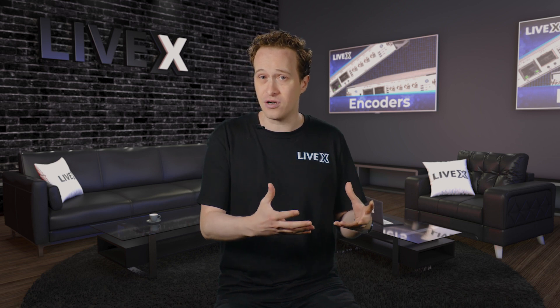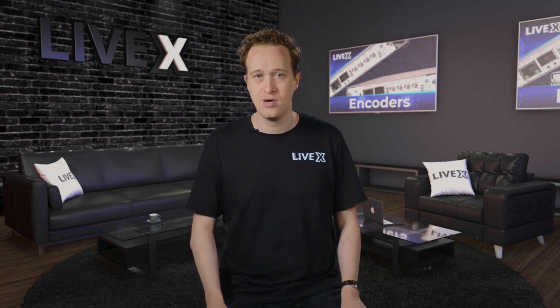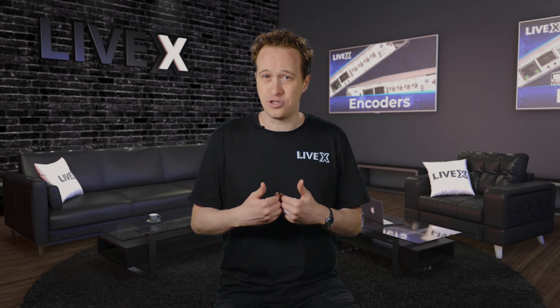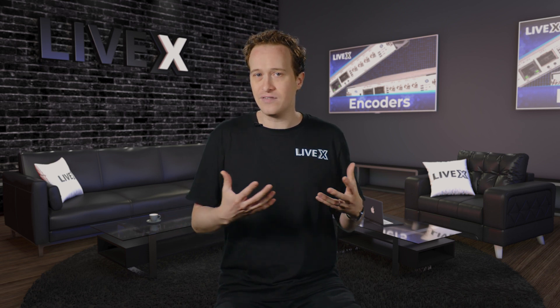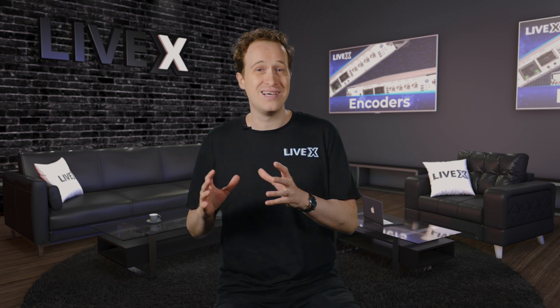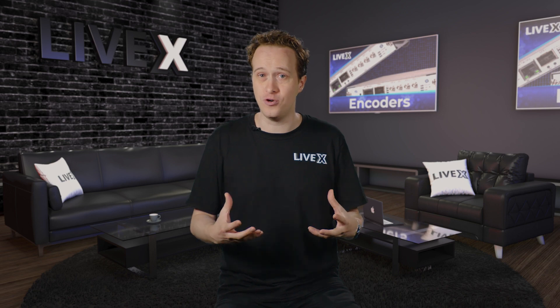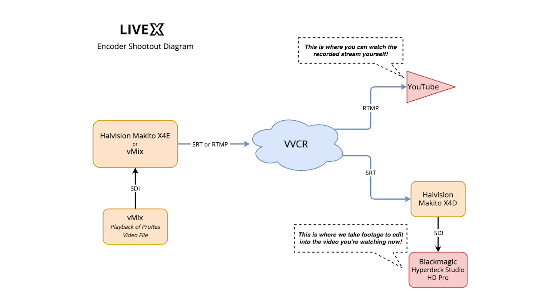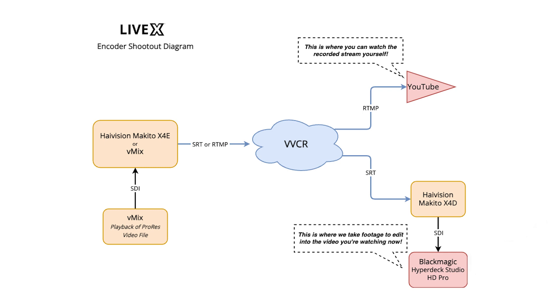Now we use VVCR for two reasons. First, it allows us to use encoders that stream either SRT or RTMP to get to YouTube. We have access to YouTube's beta SRT ingest, but as of 2023, most people don't yet. So it also allows us to stream not only to YouTube, but also to a Makito X4D decoder, which feeds a ProRes recorder for editing.